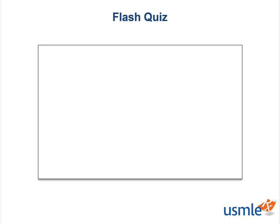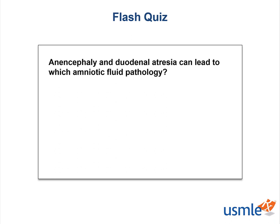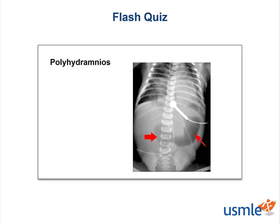Flash Quiz! Anencephaly and duodenal atresia can lead to which amniotic fluid pathology? The answer is polyhydramnios. Remember that with these fetal malformations, the fetus cannot swallow, and so the fluid builds up. The image here shows the classic double bubble sign in duodenal atresia.